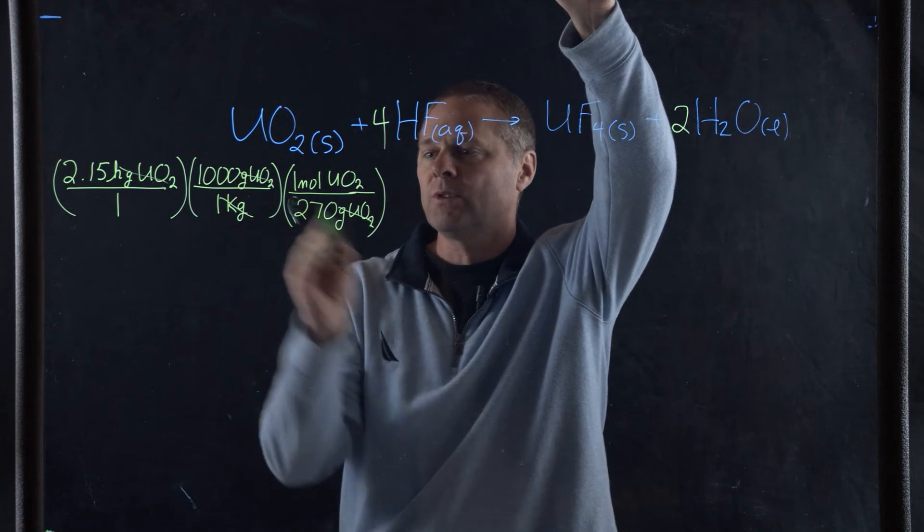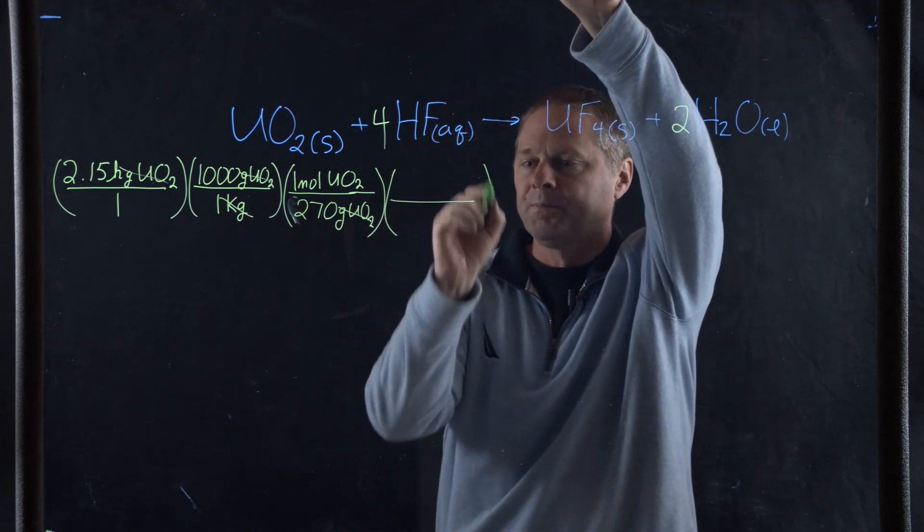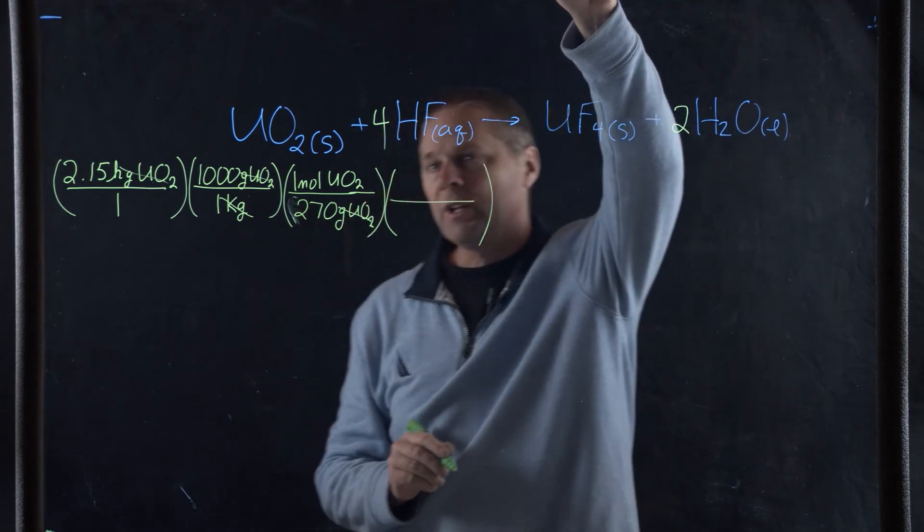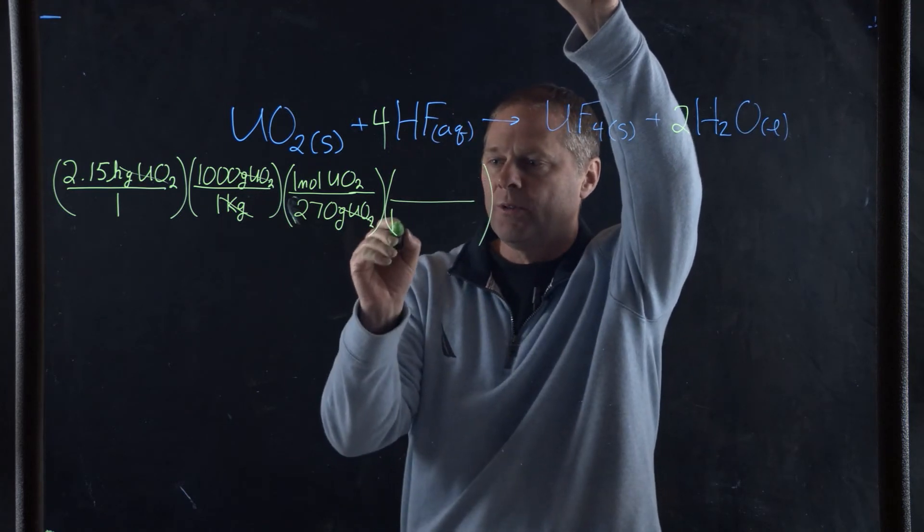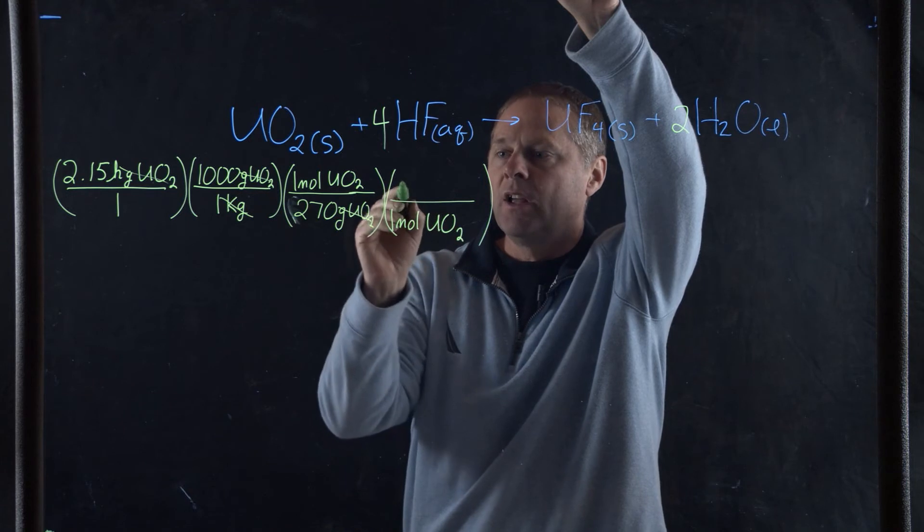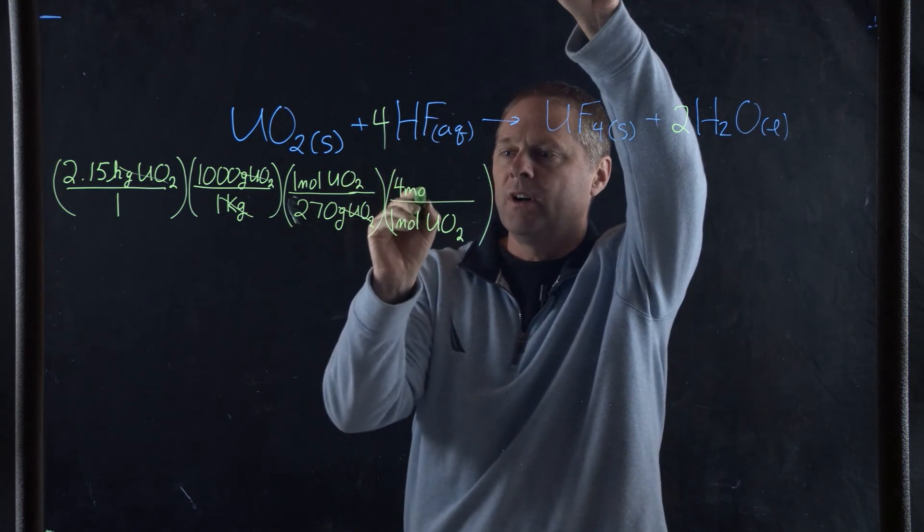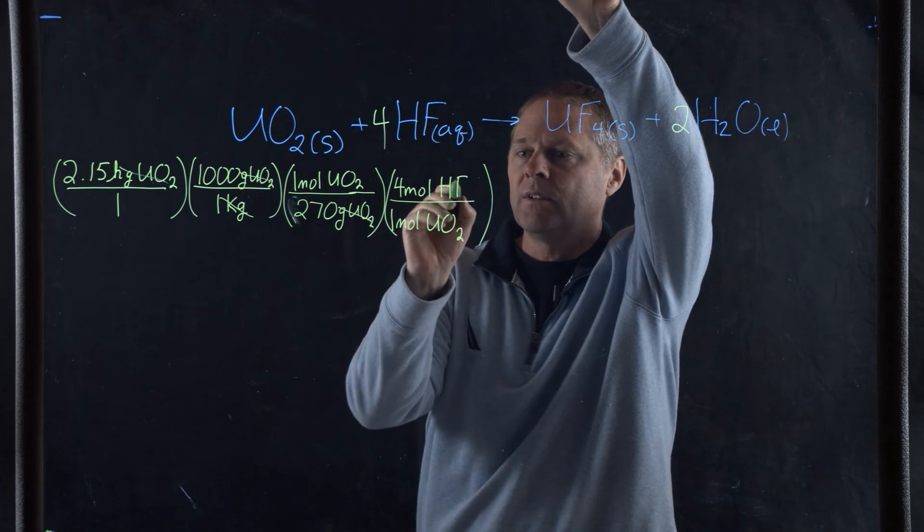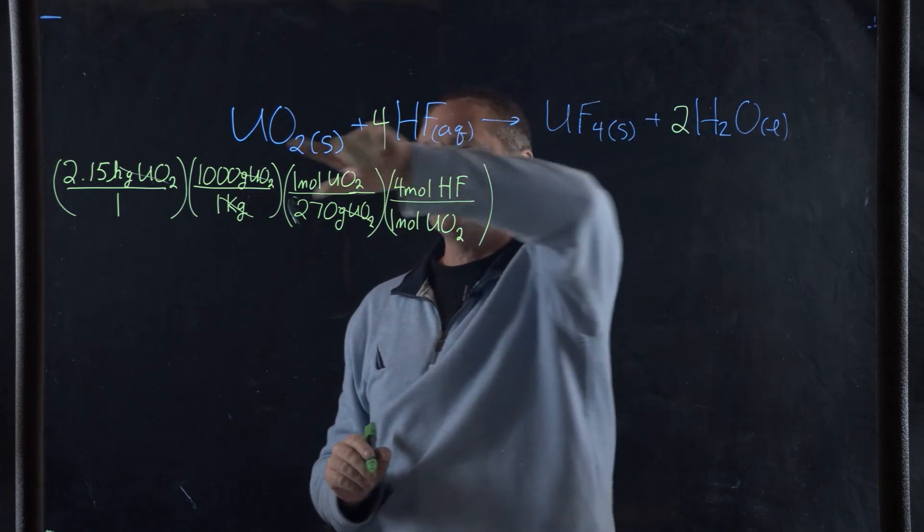For every 1 mole of uranium oxide it requires 4 moles of hydrofluoric acid, so here we have a 4 to 1 ratio. Now our moles of uranium oxide cancel.